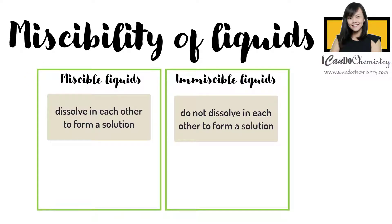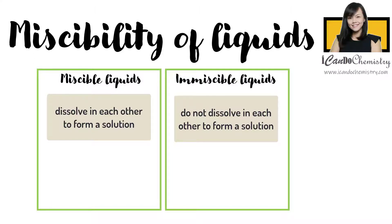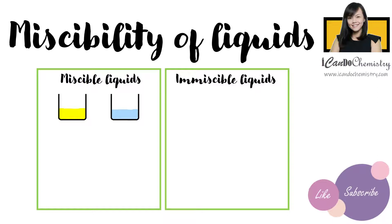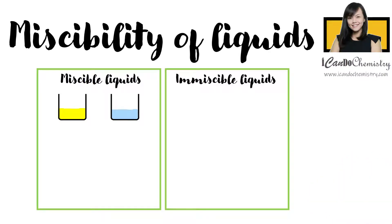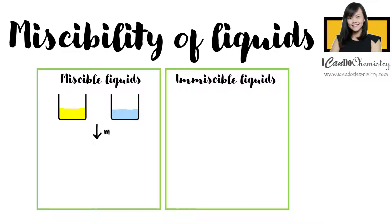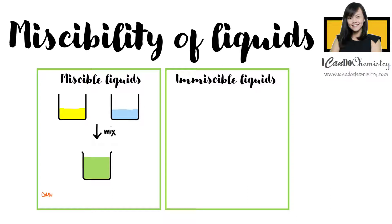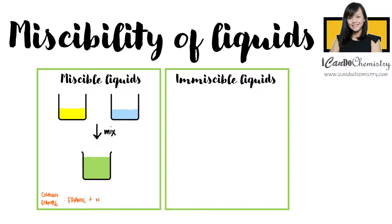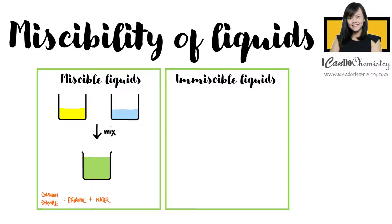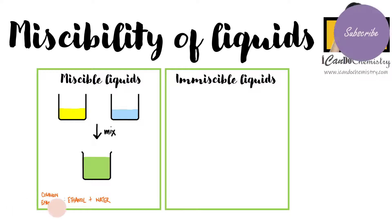Miscible liquids dissolve in each other while immiscible liquids do not. For illustration, we have a liquid which is in yellow and another liquid which is blue. When we add these two liquids together, they mix to form a green solution. One very common example of miscible liquids is the mixture of ethanol and water. When we add these two liquids together, they mix to form one solution.